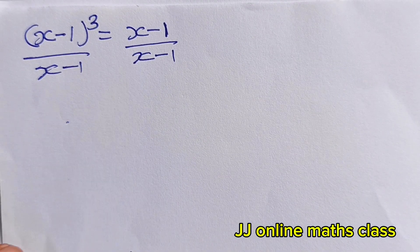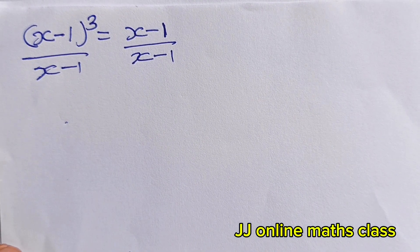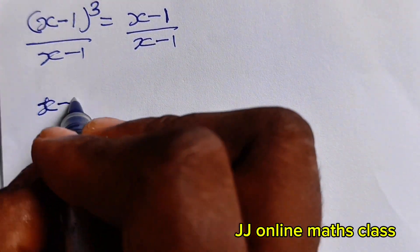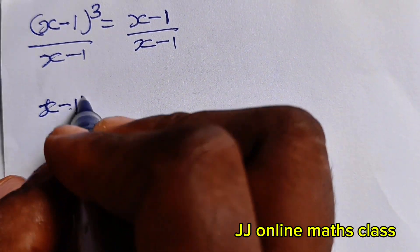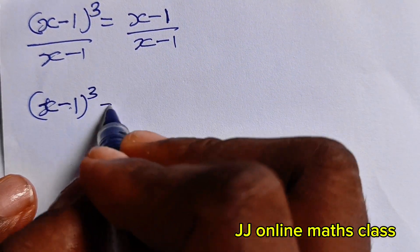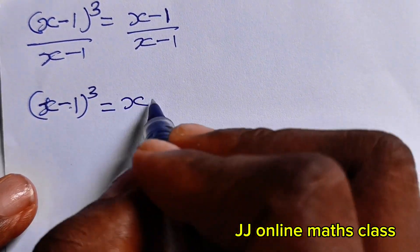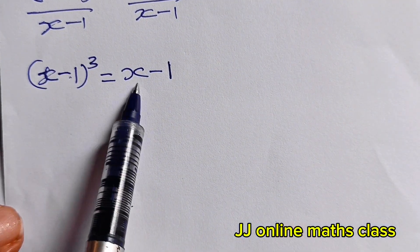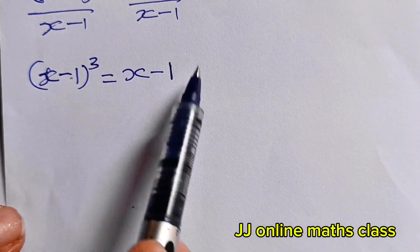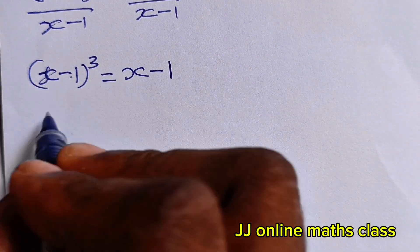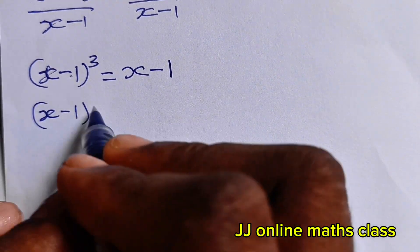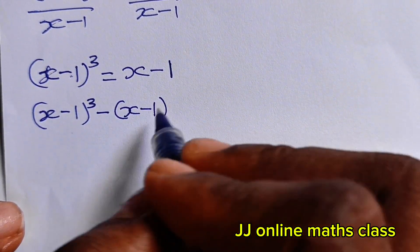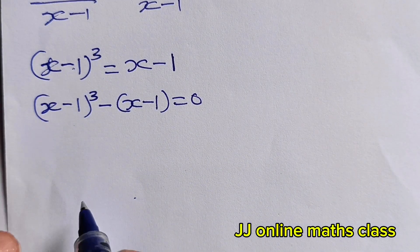The question is: (x-1) raised to the power of 3 is equal to (x-1). First, let's bring the right side over, so we have (x-1)³ minus (x-1) is equal to 0.